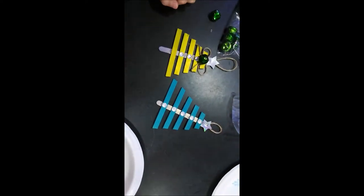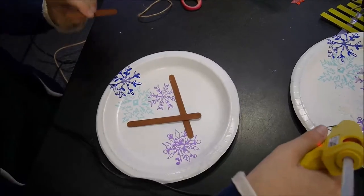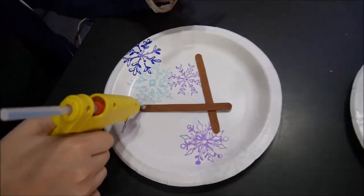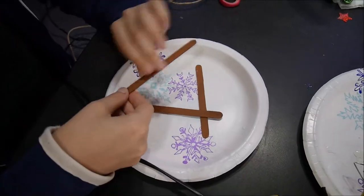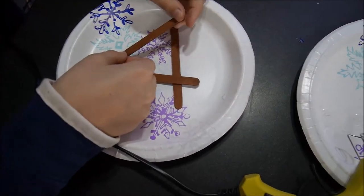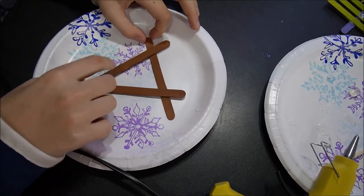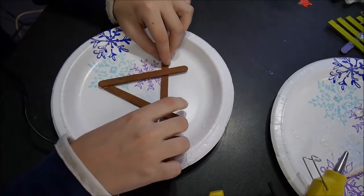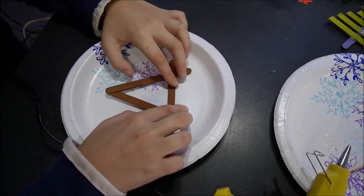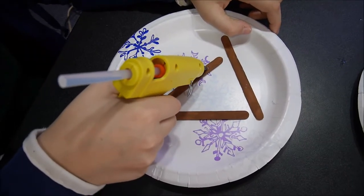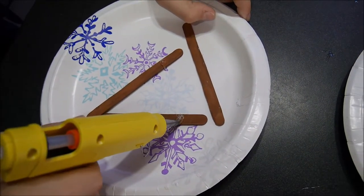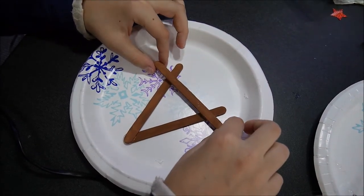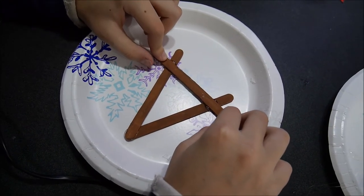Okay, now Christopher is starting with another craft, which is Rudolf, a deer, right? And he's using brown sticks. So this is an easy craft as well. You're making some sort of triangle here. And here comes his head, top of his head.